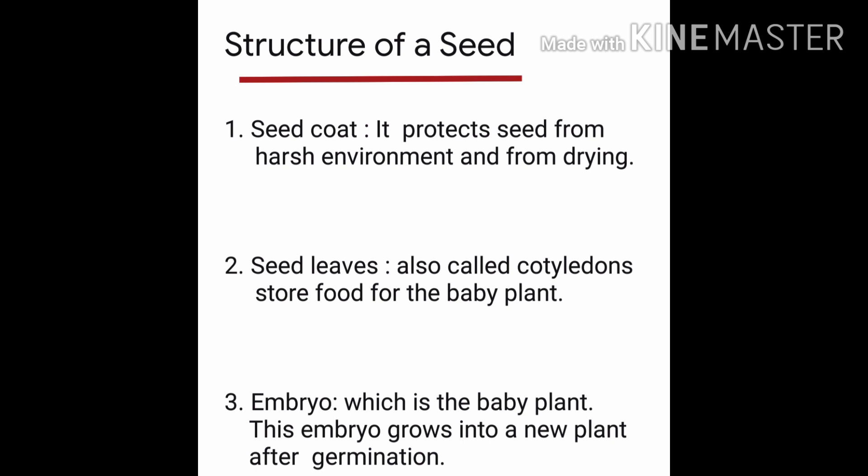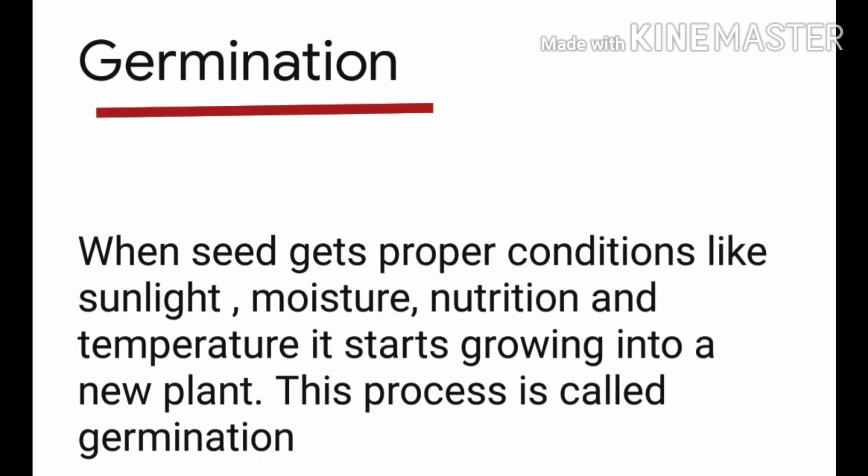And we have the embryo, which is the baby plant. This embryo grows into a new plant after germination. Then next we learned about germination. When a seed gets proper conditions like sunlight, moisture, nutrition and temperature, it starts growing into a new plant. This process is called germination.